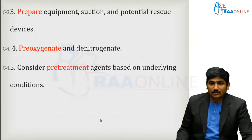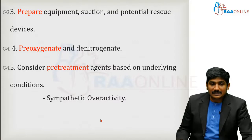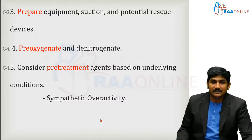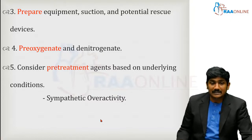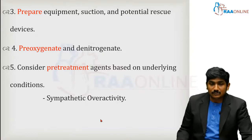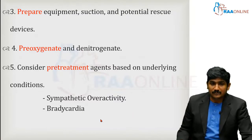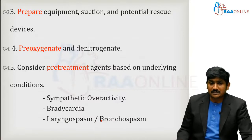Consider pre-treatment agents based on the underlying conditions. These agents can decrease sympathetic overactivity. Once you insert a laryngoscope or tube into the oral cavity, some patients can have a sympathetic response with increased pulse rate and blood pressure, which is very detrimental in coronary artery disease, aortic dissection, or head trauma with elevated ICP. In pediatric patients, laryngoscopy can cause bradycardia. Some patients can also develop laryngospasm, severe bronchospasm, or an asthmatic attack during intubation.